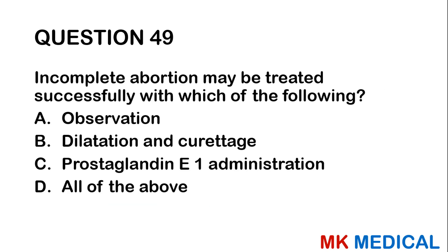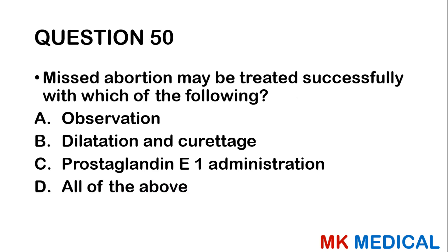Question forty-nine: Incomplete abortion may be treated successfully with which of the following? A, observation; B, dilatation and curettage; C, prostaglandin E administration; D, all of the above. All of the above is the answer. You can observe — sometimes it progresses to complete abortion — or you can perform a D&C, and you can give prostaglandin E drugs.